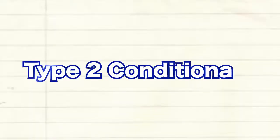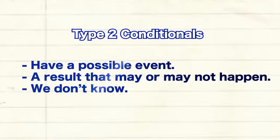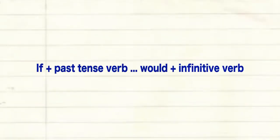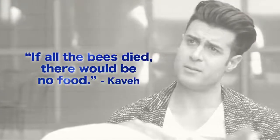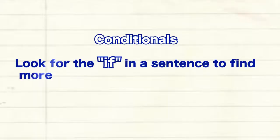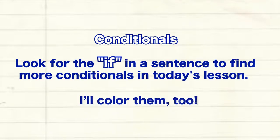Type 2 conditionals have a possible event and a result that may or may not happen — we don't know. Here is the pattern: if + past tense verb, would + infinitive verb. Kave uses this when he says, 'If all the bees died, there'd be no food.' Look for 'if' in the sentence to find more conditionals in today's lesson. I'll color them too.